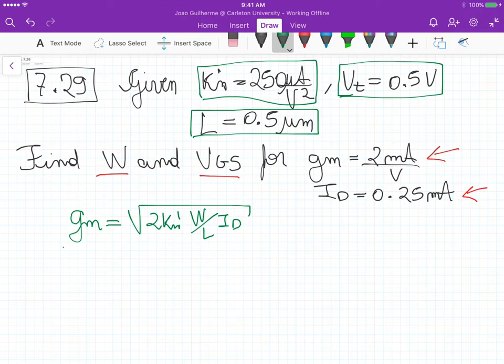So this parameter here we know, this one here we know, we also know the length and we know the current, so we can isolate W in this equation. If we square both sides of the equation, we get rid of this square root and we can isolate W.